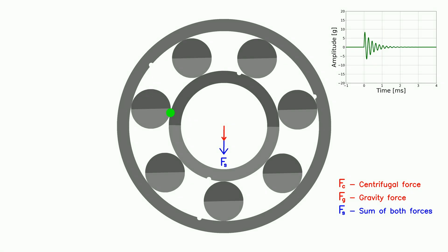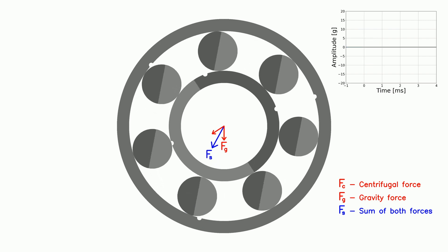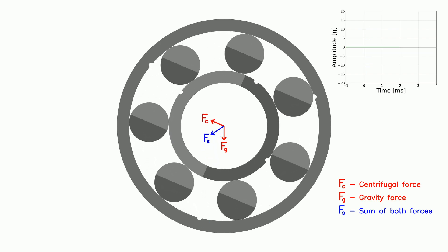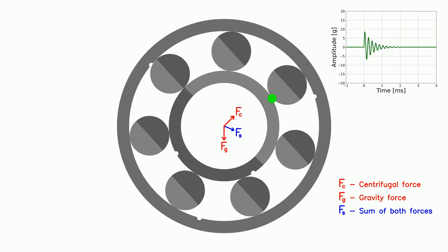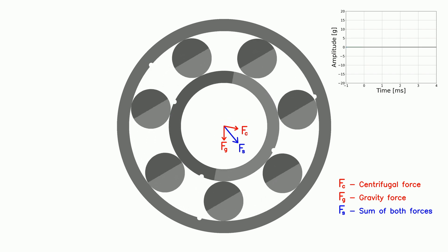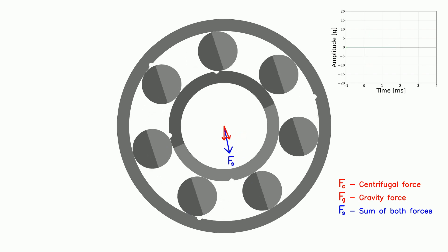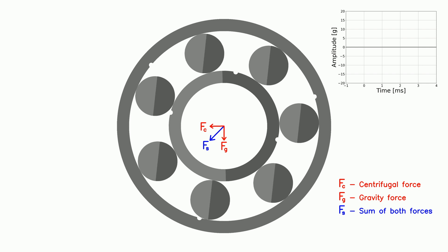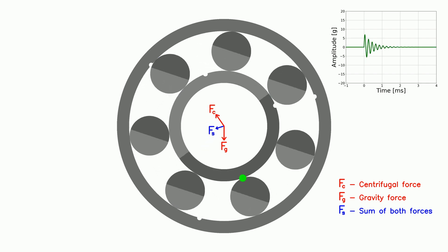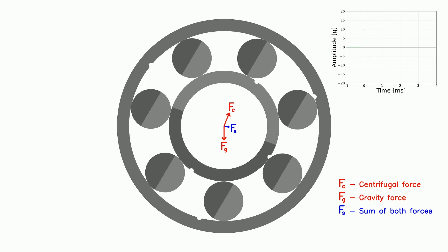If there is unbalance and a force due to the shaft's weight, they add together. Modulation happens to the outer race shocks and to the inner race shocks. It is because the sum of the forces, Fs, changes as the shaft rotates. Therefore, forces acting on faults on both races are variable.